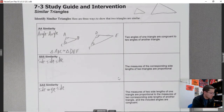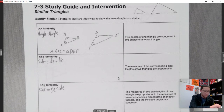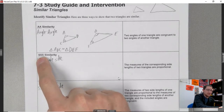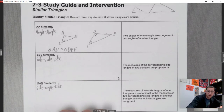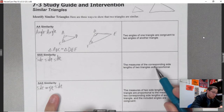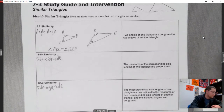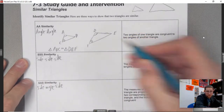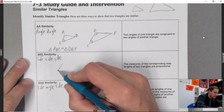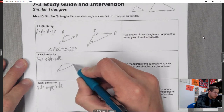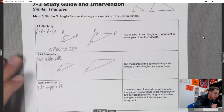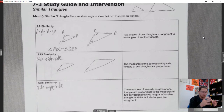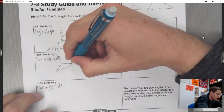Side-side-side similarity: the measures of the corresponding side lengths of two triangles are proportional. Angle-angle is something different — we didn't talk about angle-angle with congruence. We did have side-side-side congruence, but this is side-side-side similarity. Let's draw two triangles and use some real lengths.